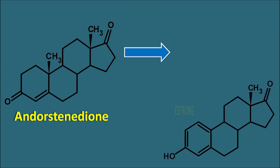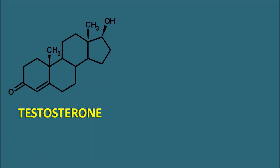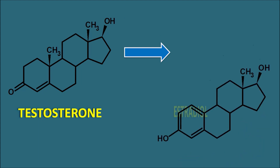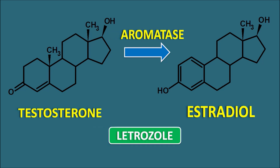This is the androstenedione — it has only one double bond at the fourth position and a ketone group at the third position. The first ring should be converted into an aromatic ring, so androstenedione is converted into estrone, where the ketone is converted into enol and an extra double bond is introduced such that the first ring becomes aromatic. This reaction is mediated by the aromatase enzyme. Similarly, testosterone also has a ketone group at the third position and a double bond at the fourth position and is converted into estradiol by the same aromatase enzyme.